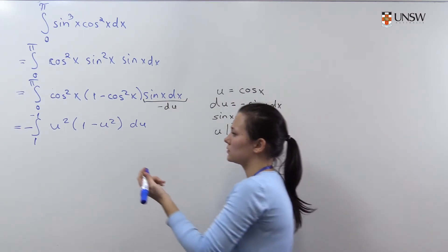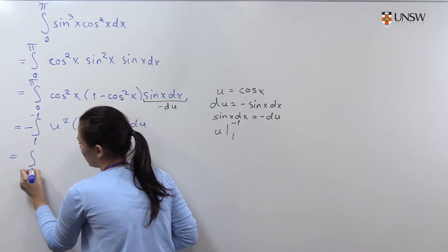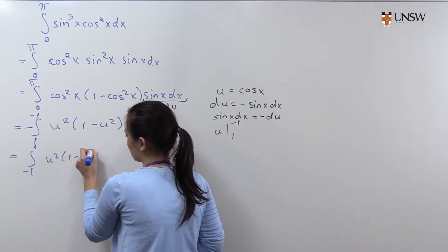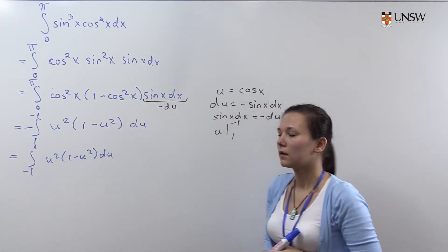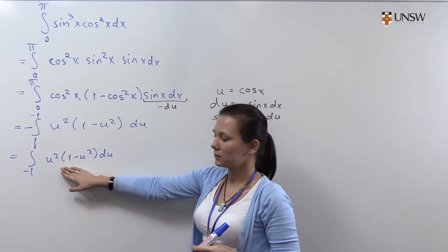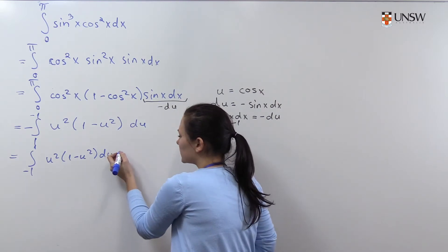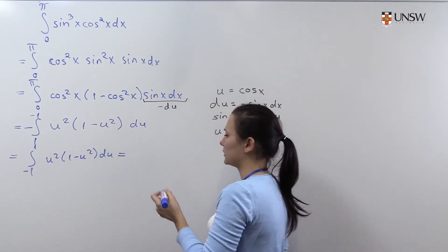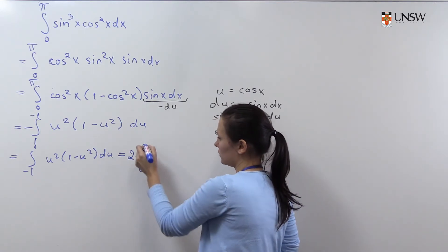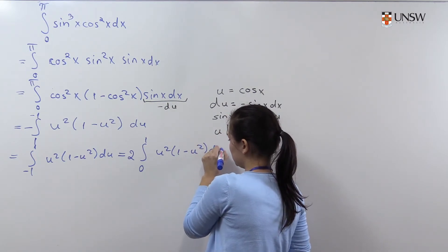By the properties of the integral we can write it as integral from minus 1 to 1 with the same function inside. We have an even function over the interval minus 1 to 1. By the properties of integral we can write it as 2 times the integral from 0 to 1 of u squared (1 minus u squared) du.